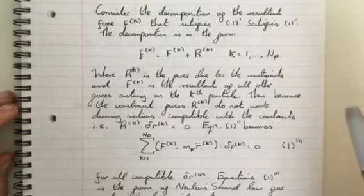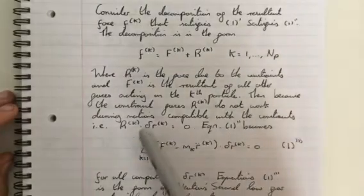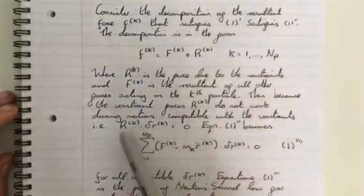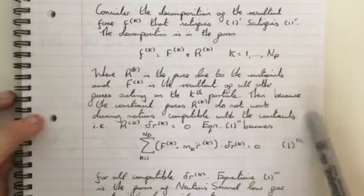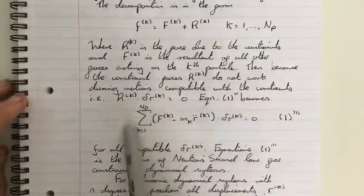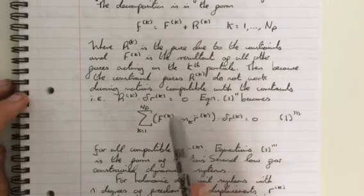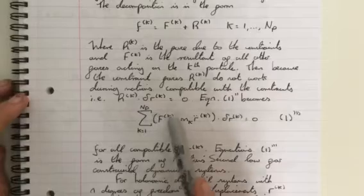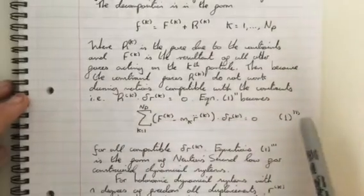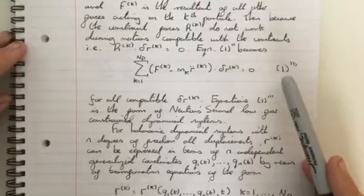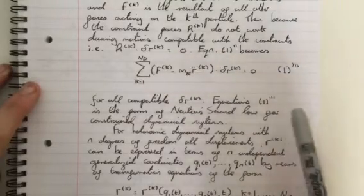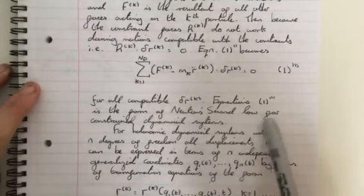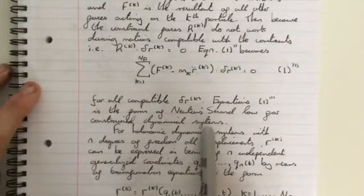Then because the constraint forces capital Rk do not work during motions compatible with the constraints, i.e. Rk dotted with delta Rk is 0, our Newton's second law becomes this. We have our summation, but we simply substitute lowercase f for capital F. Remember, R is not compatible in this case with our constraints. So Newton's second law becomes this for all compatible delta Rk. So this equation is the form of Newton's second law for constrained dynamical systems.